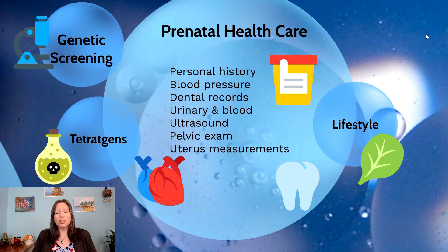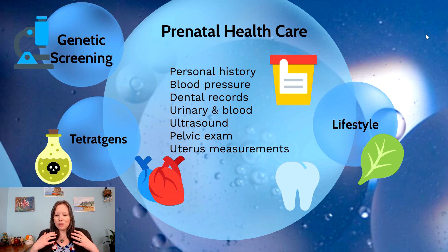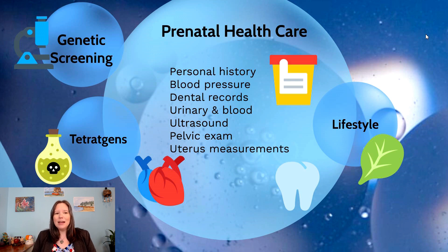Another thing to consider is dental records — something as simple as an infected tooth could lead to pregnancy complications. We also do lots of urine and blood tests throughout the pregnancy to screen for possible complications. Ultrasounds are one of the best ways to look at the brain, stomach, heart, and spine in terms of development. We also take pelvic exams and measure the fundus — the top of the uterus — to determine if the fetus is growing at the expected rate.